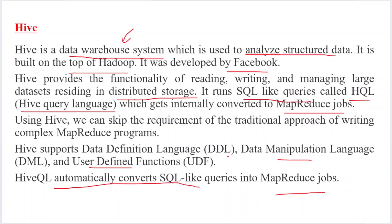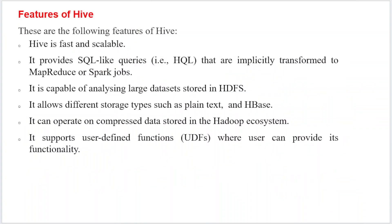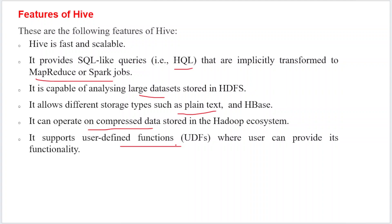The features of Hive: Hive is very fast and scalable. It provides SQL-like queries — that's why we call it HQL — where we can transform MapReduce or Spark jobs. It is capable of analyzing large datasets stored on HDFS. It allows storage types like compliant text and HBase, can operate on compressed data in the Hadoop ecosystem, and supports user-defined functions.